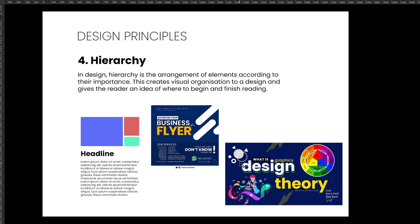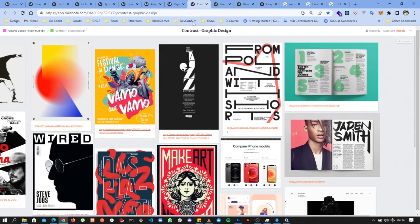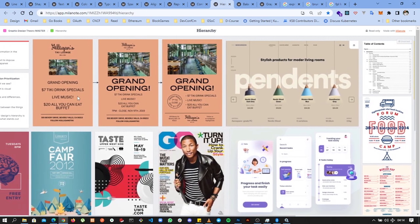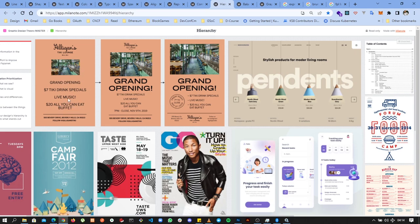Hierarchy is the arrangement of elements according to their importance. It creates visual organization in a design and gives the reader an idea of where to begin and finish reading — directing the viewer from the most important element to the least. Sometimes clients will ask to make certain items bigger because they feel that content is important. Every design has just one message to communicate, so hierarchy helps emphasize the right things. You can see how adding hierarchy to a design directs the viewer's eyes and helps them know where to start.